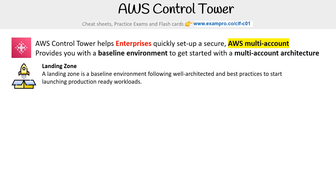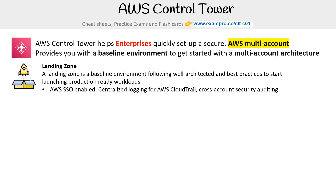Imagine you wanted to have the perfect environment that you know is secure, is correctly configured, and has good logging in place — that's what a landing zone is. AWS's landing zone for Control Tower will have SSO enabled by default, making it very easy to move between accounts. It will have centralized logging for AWS CloudTrail so logs are tamper-evident and away from your workloads. It will also have cross-account security auditing.